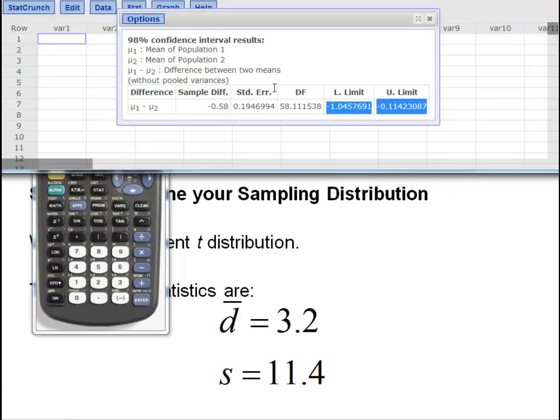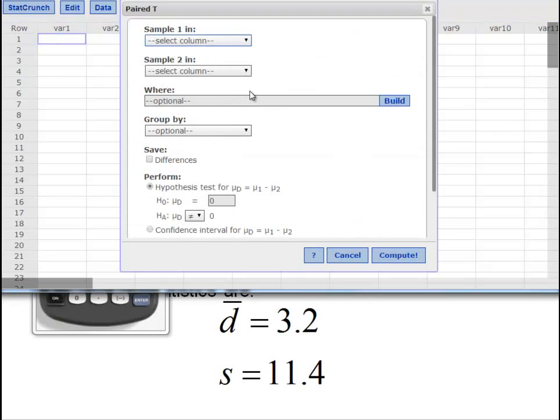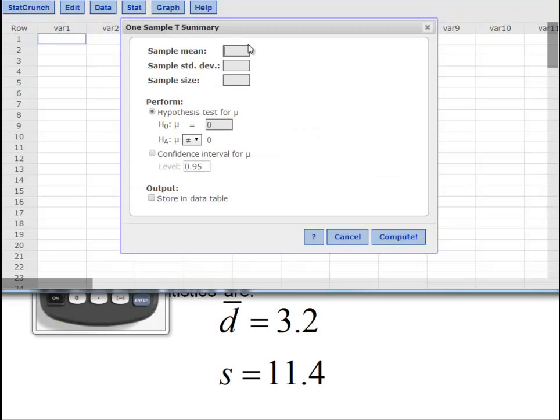StatCrunch just as easy. T statistics, we are now back to one sample, but it actually has the option for paired data. In this case you have to have your data in columns, so you would have to have the raw data of presidents' height in one column and vice presidents' height in another column. Since we don't have that, we can't do the paired version.